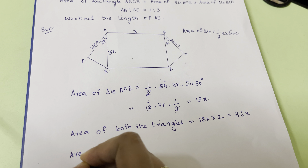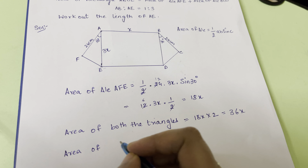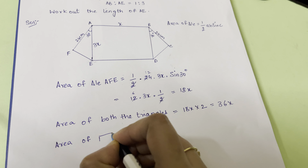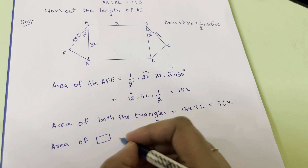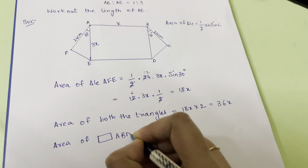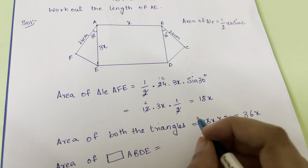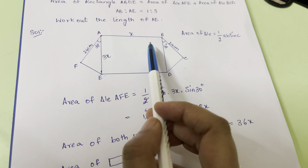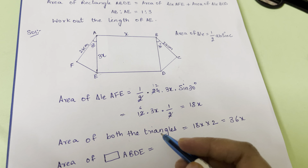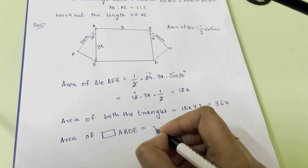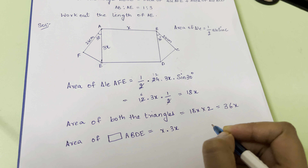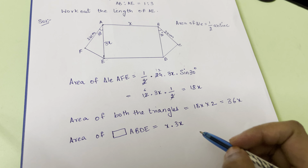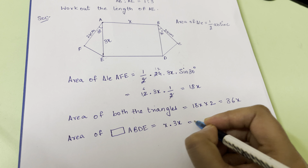The area of a rectangle is length times breadth. For rectangle ABDE, the length is AB = x and the breadth is AE = 3x, so the area equals x × 3x = 3x².